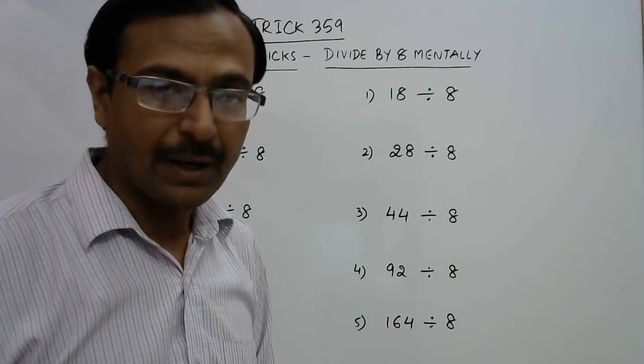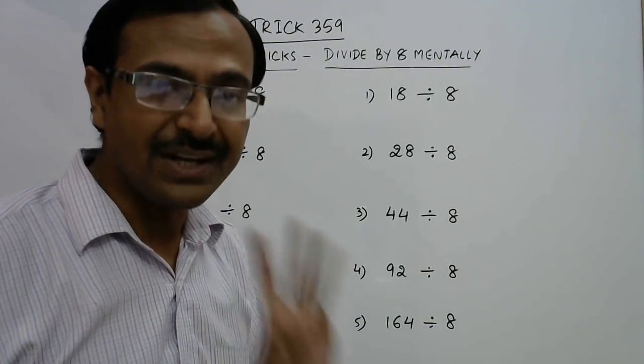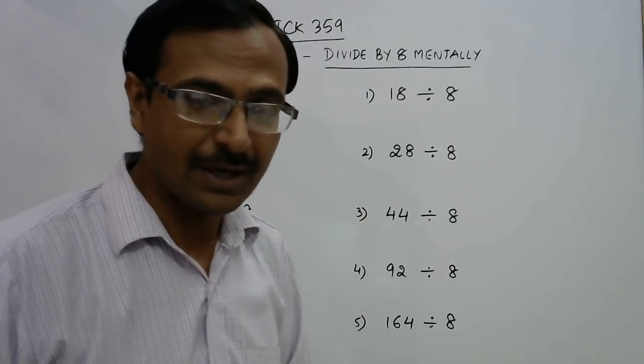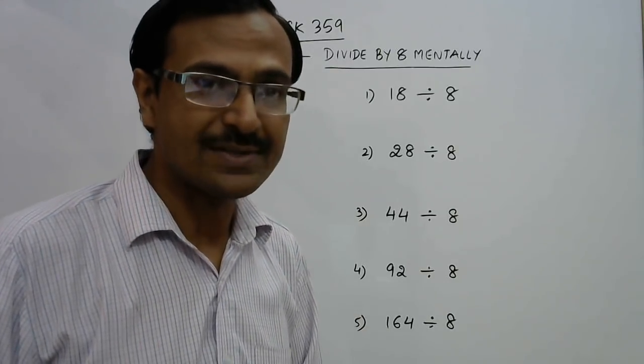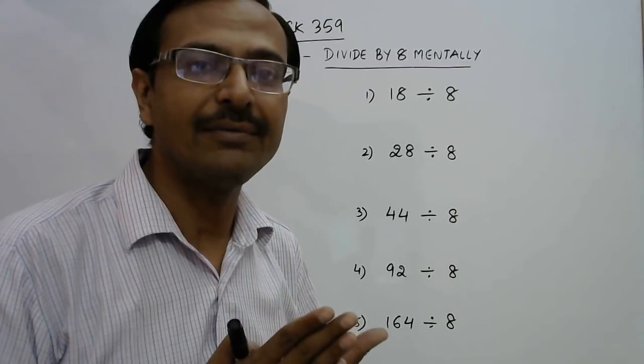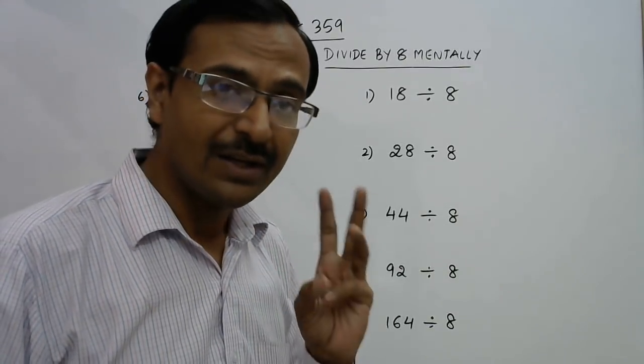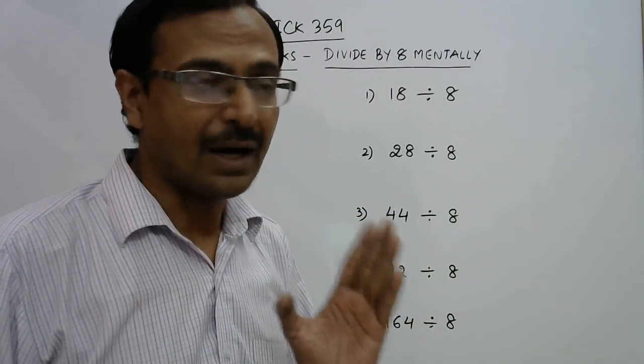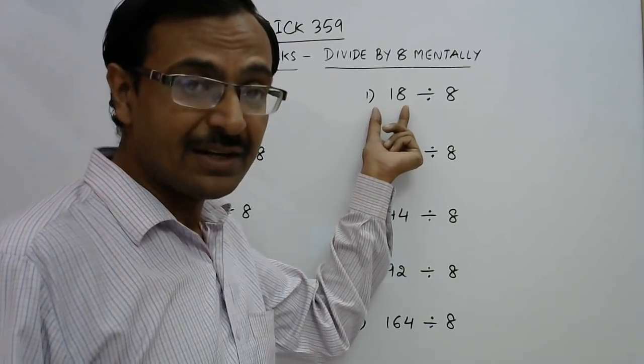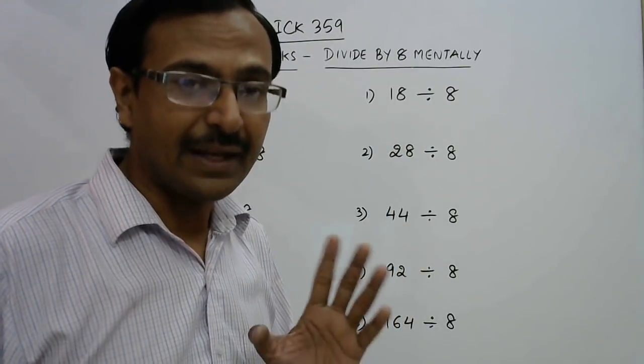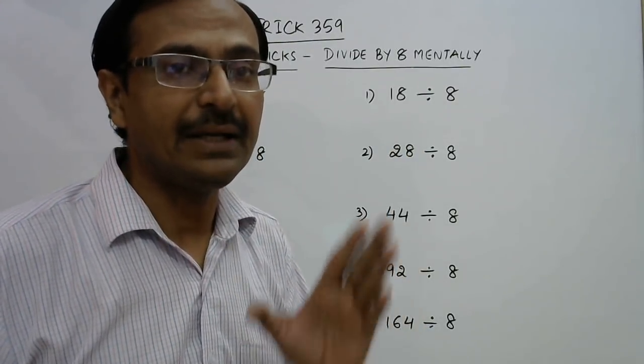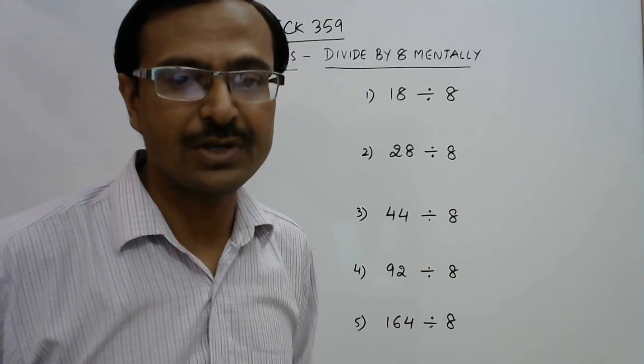And what is dividing by 2? Dividing by 2 is actually taking the half of the number. So when you take the half of the dividend 3 times, then actually you are dividing a number by 8. I'll just demonstrate this to you.